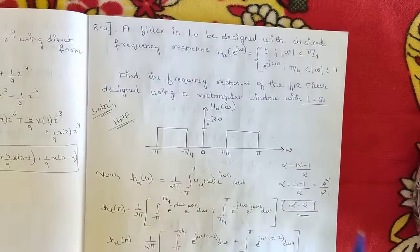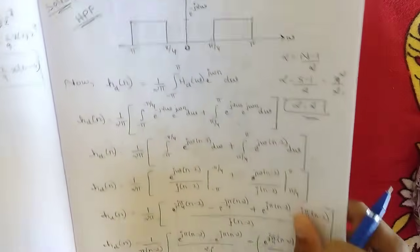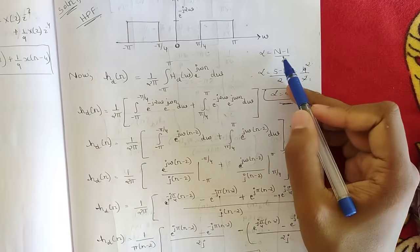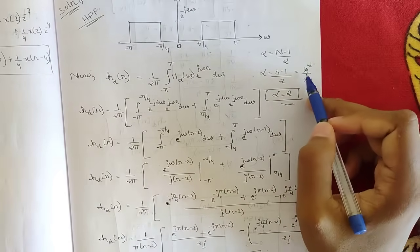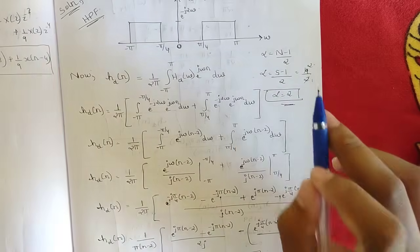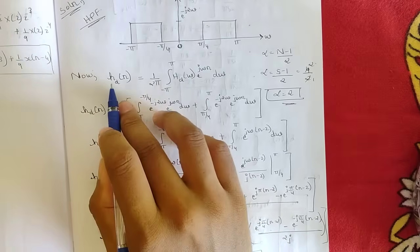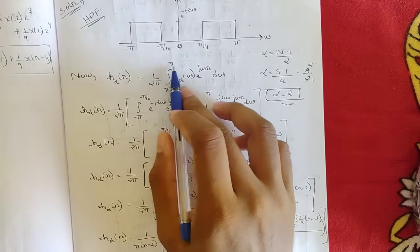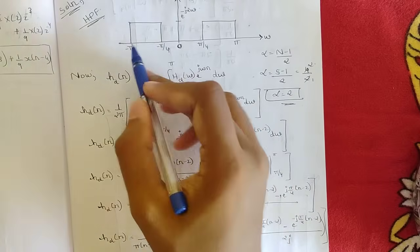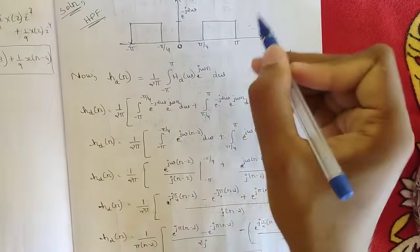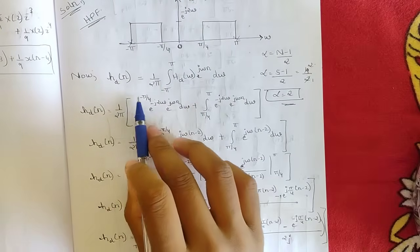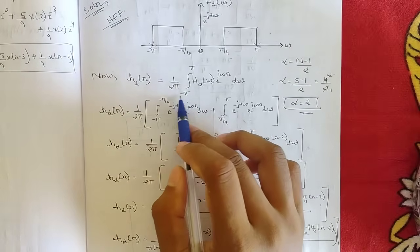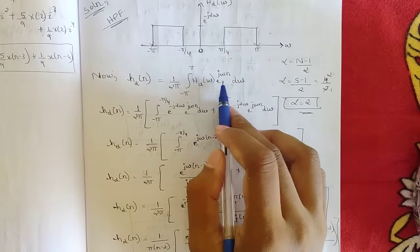For a high-pass filter, use separate integration limits for the impulse response hd(n). First, find alpha: alpha = (N-1)/2 = (5-1)/2 = 2. The desired impulse response hd(n) is given by 1/(2π) times the integral from minus pi to pi of Hd(ω) e^(jωn) dω.